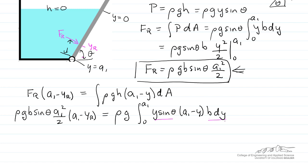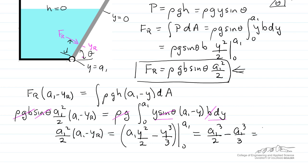I can cancel constant terms on both sides and perform the integration. Evaluating between the limits, the right side becomes a1³/2 minus a1³/3. With a common denominator, this becomes (3a1³ - 2a1³)/6.